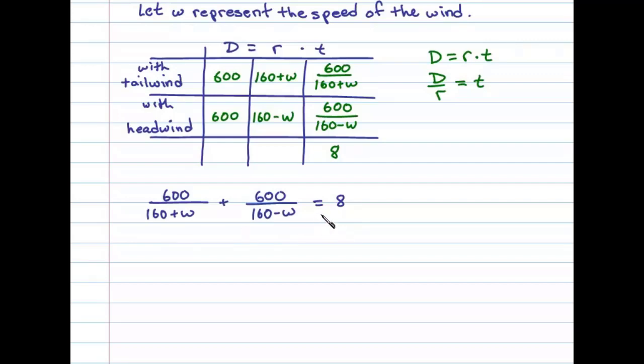To solve this rational equation, we begin by multiplying both sides by the LCD, which in this case is 160 plus W times 160 minus W. Here we can see that multiplying by the LCD requires us to apply the distributive property on the left side.